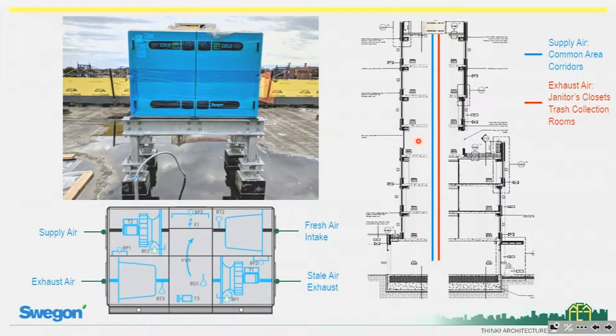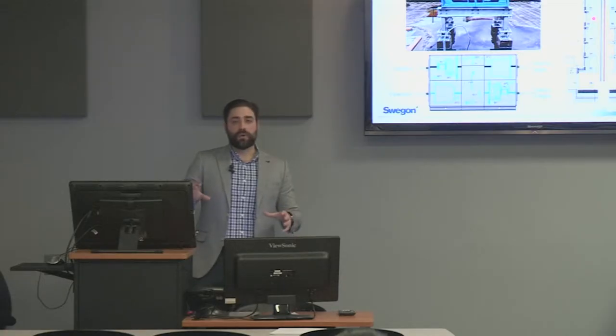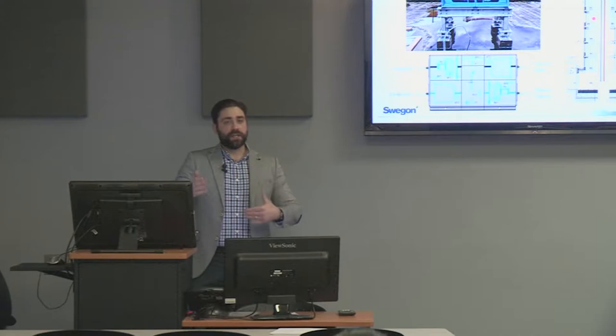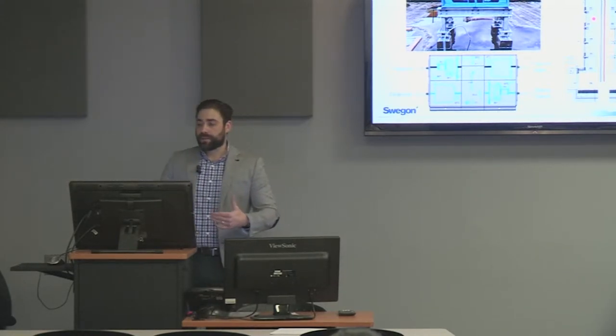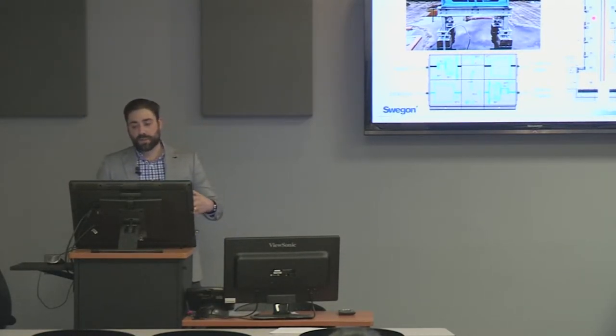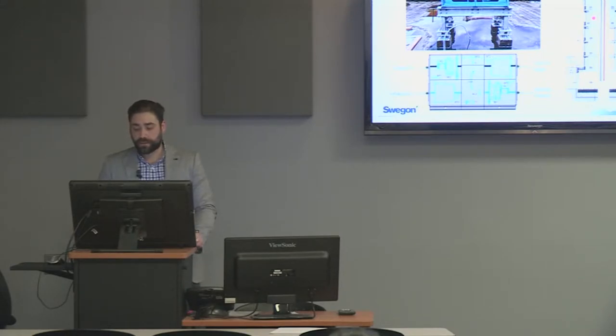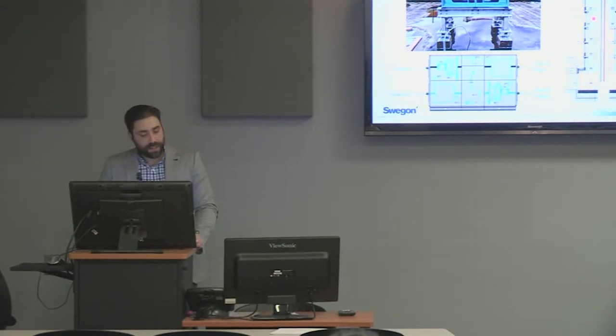There are actually two ducts running down through the building. We're exhausting out of the janitor's closets and the trash collection rooms, and then supplying fresh air into the common area corridors. So again, we have this balanced ventilation approach, and we're able to ventilate the common area spaces as well as the first floor commercial facility.